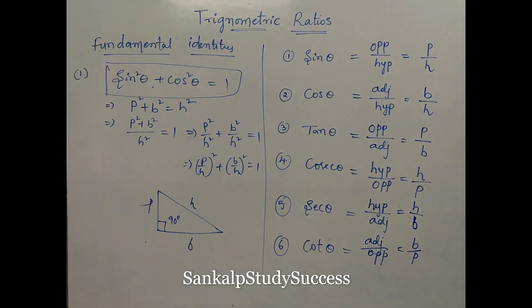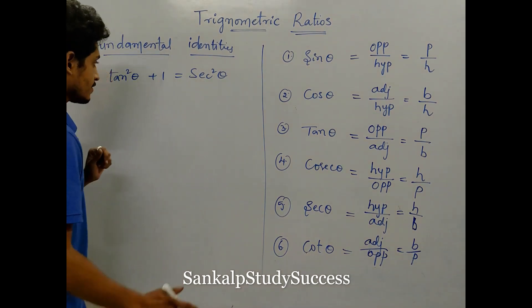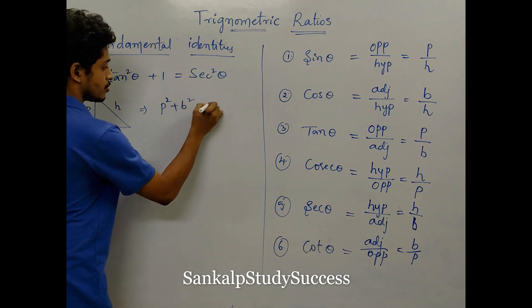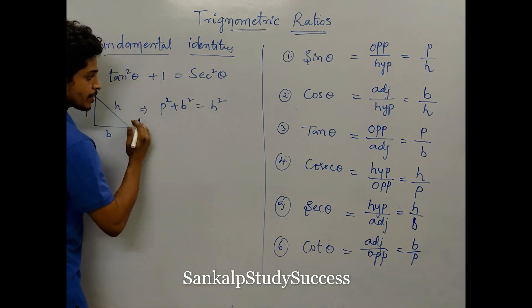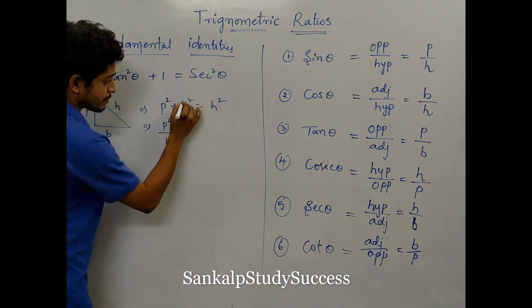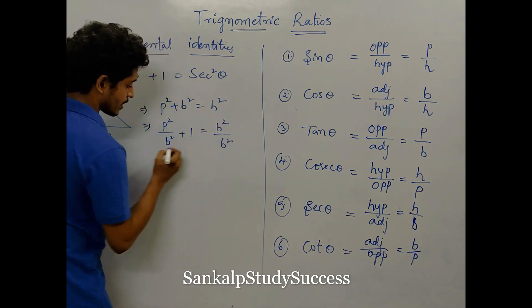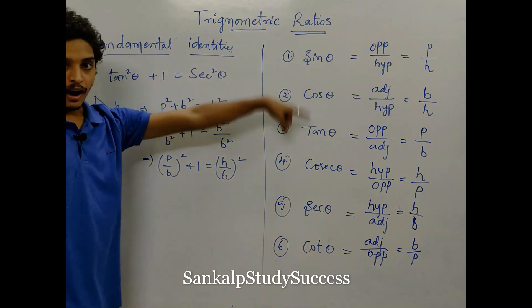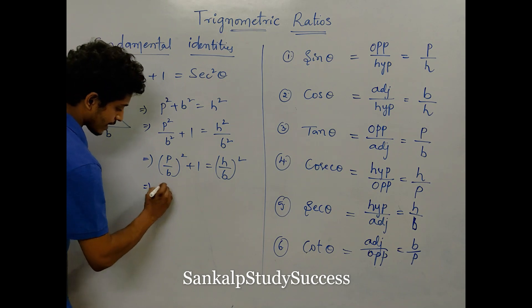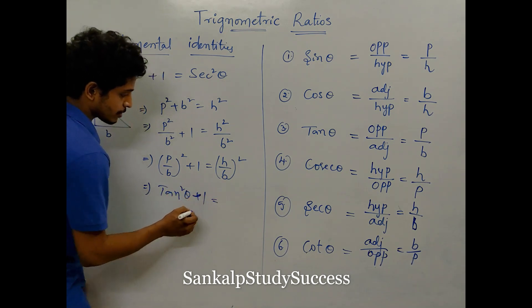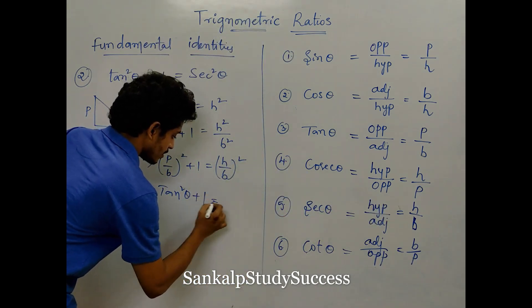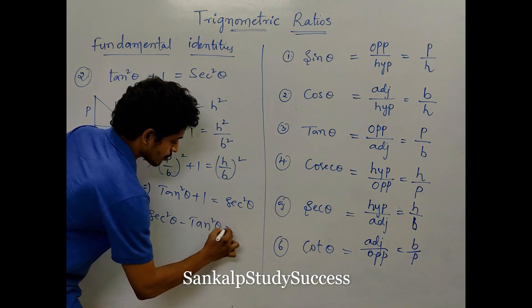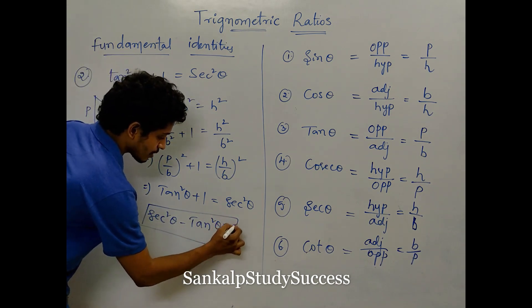The second identity: tan²θ + 1 = sec²θ. From the right triangle with sides P, B, H — according to Pythagoras theorem, P² + B² = H². Dividing by B²: P²/B² + 1 = H²/B², which gives (P/B)² + 1 = (H/B)². Since P/B is tan and H/B is secant, we get tan²θ + 1 = sec²θ, or equivalently sec²θ − tan²θ = 1.